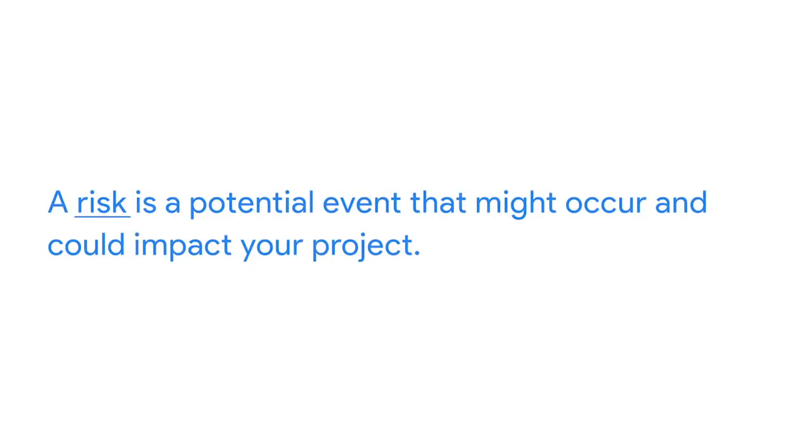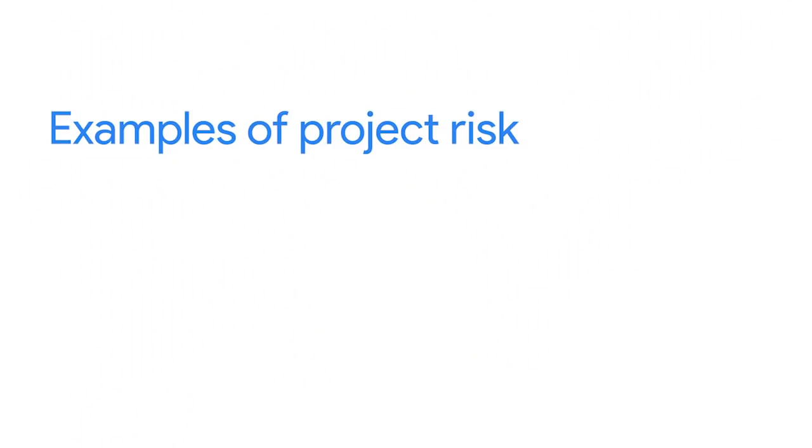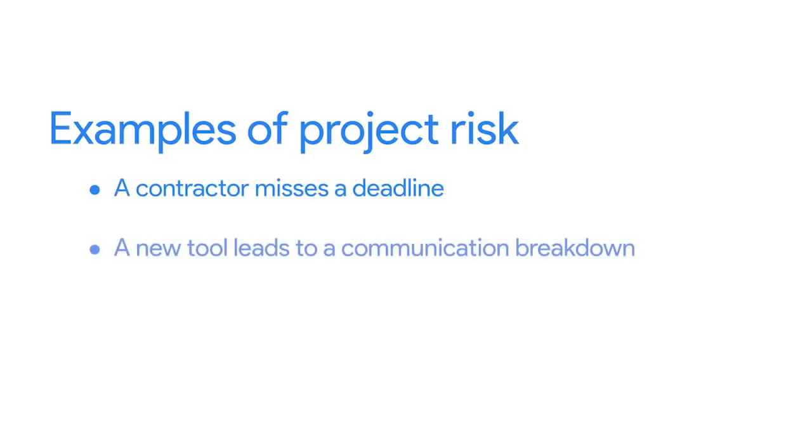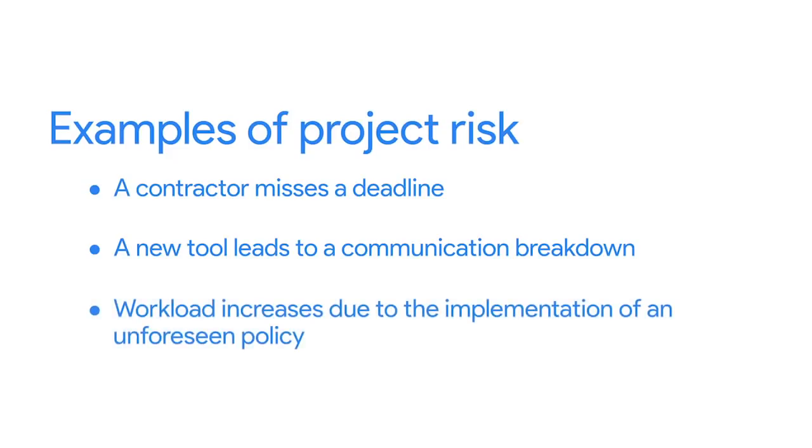Welcome back. In an earlier video, we learned about how to identify risks when planning projects. In this module, we'll learn why risks and changes might occur during a project and how that can impact your project's scope. A risk is a potential event that might occur and could impact your project. These might not be events that will definitely happen, but because there's a possibility that they could happen, it's your responsibility as a project manager to identify and plan for those risks. A project risk might be a contractor missing a deadline, introducing a tool that may lead to communication breakdown, or unexpected additional work because of an unforeseen policy being put in place.